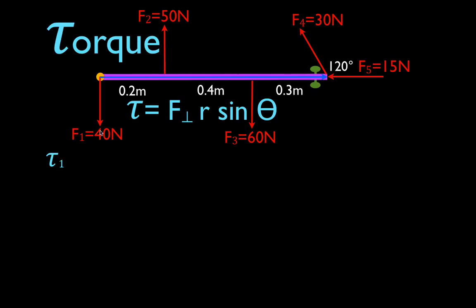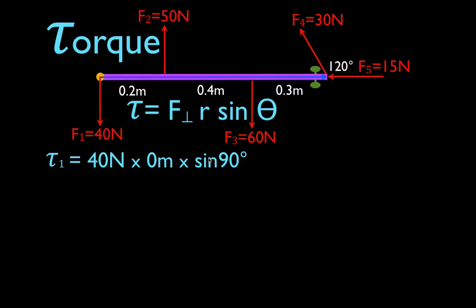The torque from force number one — force number one is 40 newtons — we multiply 40 newtons times the lever arm, which is zero meters. This force is applied right at the axis of rotation, so the lever arm is zero, times the sine of 90 degrees. This is zero, and any number times zero is zero. When you apply a force right at the axis of rotation, it's not going to produce any rotation and it's not going to produce any torque.